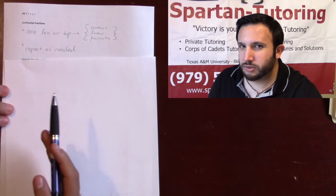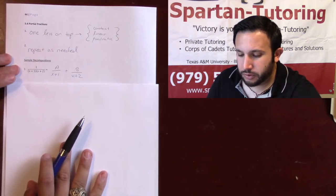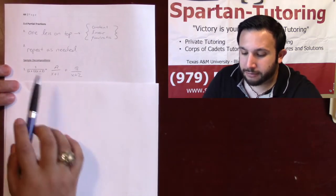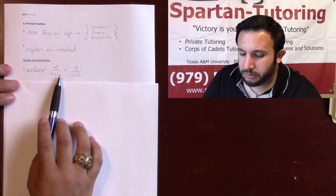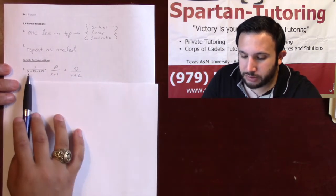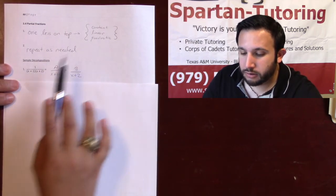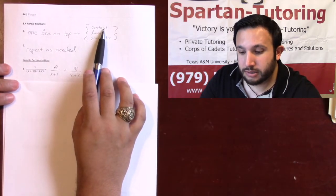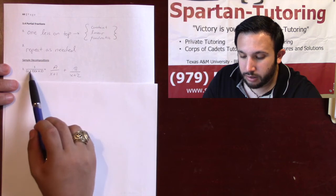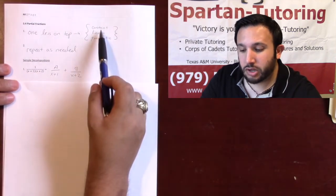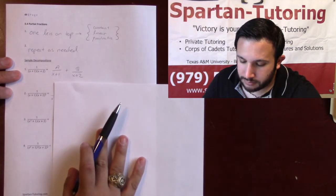For the first scenario, I have 1 over (x+1)(x+2). I split this into A over (x+1) plus B over (x+2). Looking at each parentheses: x+1 is a linear function, and one less than linear is a constant, so I put an arbitrary constant A on top. Then the next parentheses is also linear, so I put a different constant B over x+2.